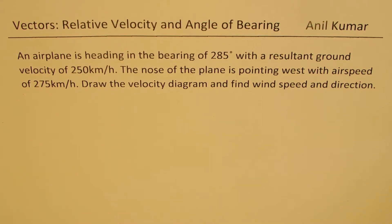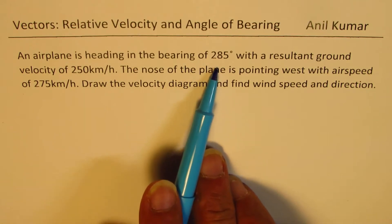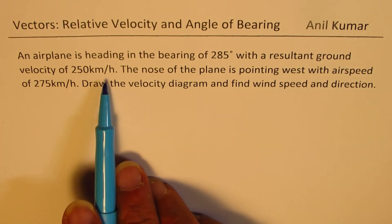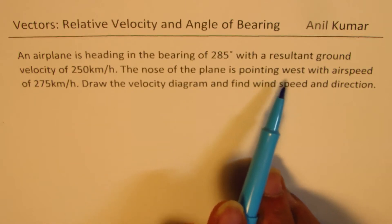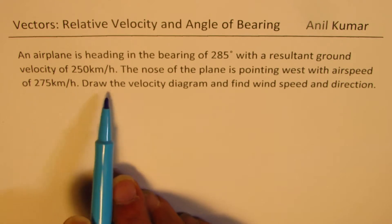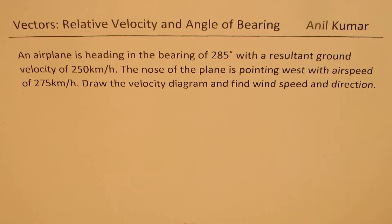I am Anil Kumar sharing with you a very important concept about relative velocity. This is a topic we discuss in physics, kinematics, and also mathematics. The question here is: an airplane is heading at a bearing of 285 degrees with a resultant ground velocity of 250 km/h. The nose of the plane is pointing west with an airspeed of 275 km/h. Draw the velocity diagram and find wind speed and direction.